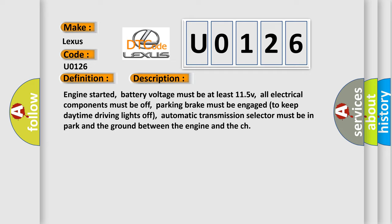Engine started, battery voltage must be at least 11.5V, all electrical components must be off, parking brake must be engaged to keep daytime driving lights off, automatic transmission selector must be in park, and the ground between the engine and the chassis must be properly connected.